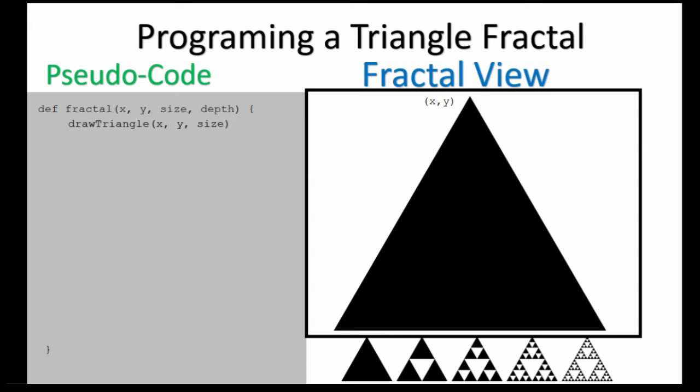Now we know the chords of the remaining points. One is at x minus size, y minus size times radical three, and the other is at x plus size, y minus size times radical three.